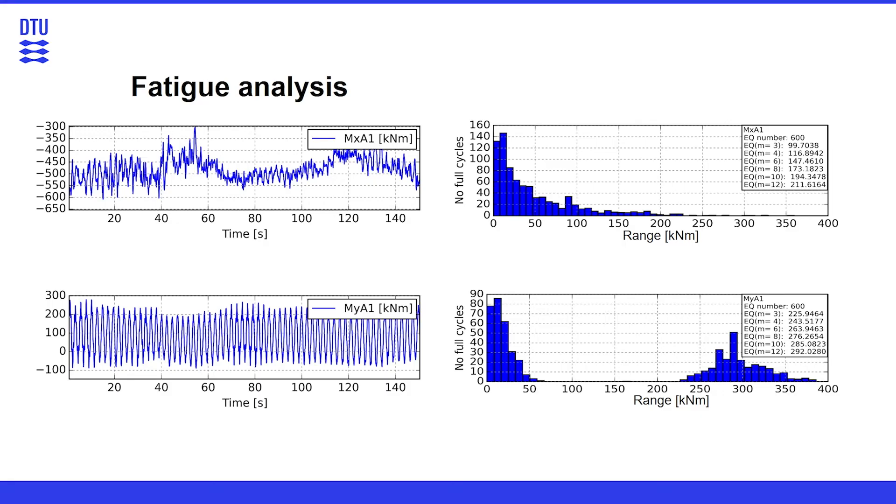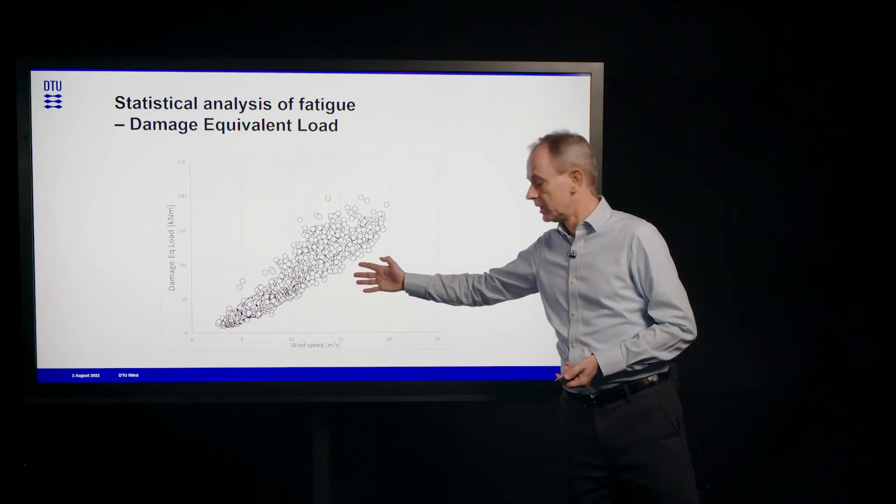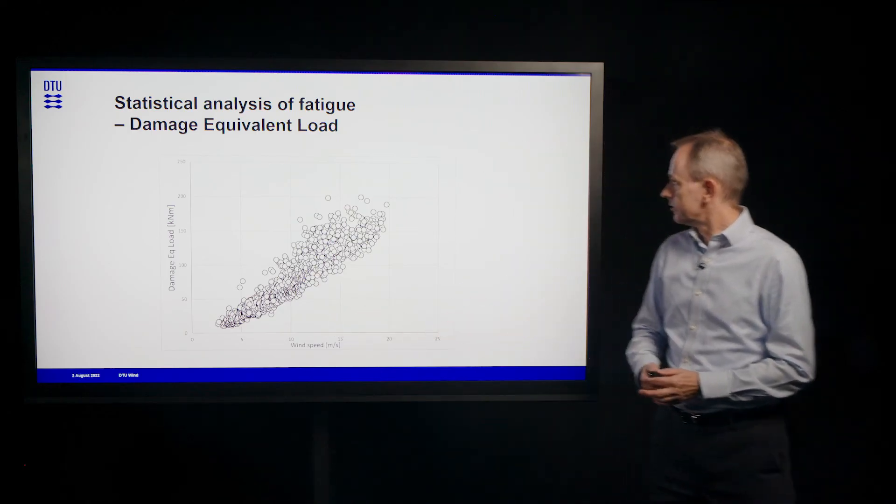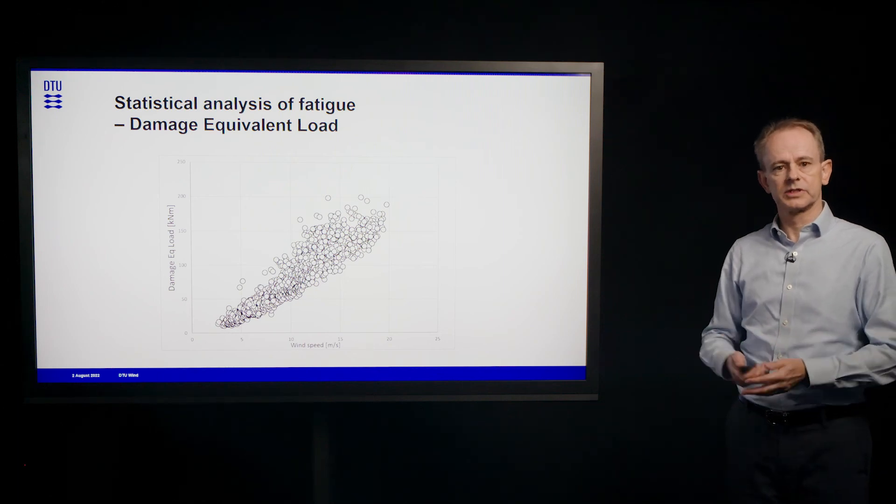If we know the material property, we can convert that complicated information into a single digit, one single number. And that one we call the damage equivalent load. Here it's done for a number of time series plotted as function of wind speed. And for that one we can now apply the same statistical analysis as we do to the time series.